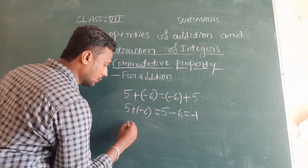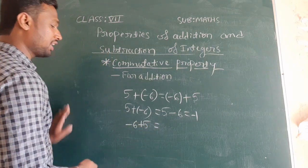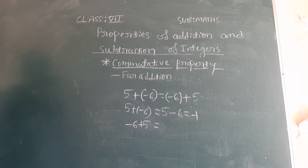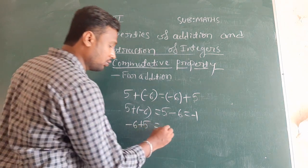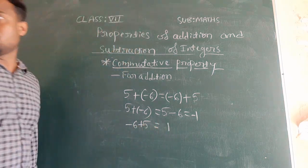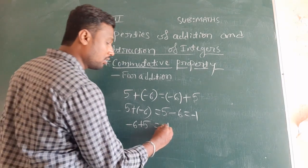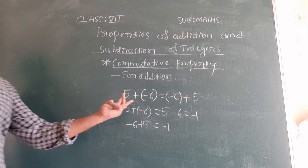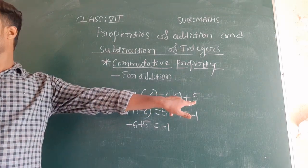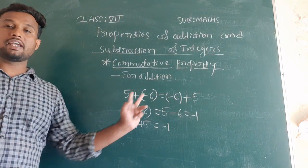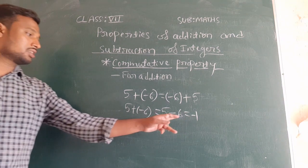Now we consider minus 6 plus 5. Minus into plus is minus, so we have to subtract: 6 minus 5 equals 1, and the sign in front of the bigger value is minus. Therefore here also we got minus 1. When you interchange these terms, a and b, we are getting the same answer, that is minus 1.